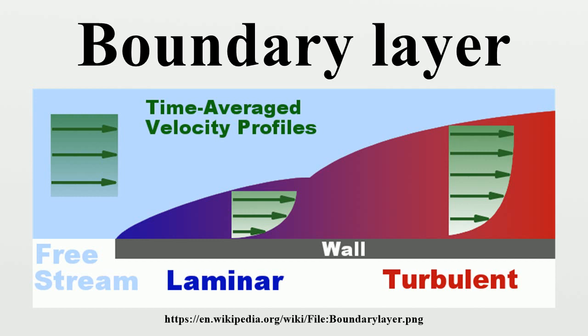If the Prandtl number is less than 1, which is the case for air at standard conditions, the thermal boundary layer is thicker than the velocity boundary layer. In high-performance designs, such as gliders and commercial aircraft, much attention is paid to controlling the behavior of the boundary layer to minimize drag. Two effects have to be considered: first, the boundary layer adds to the effective thickness of the body through the displacement thickness, hence increasing the pressure drag. Secondly, the shear forces at the surface of the wing create skin friction drag.